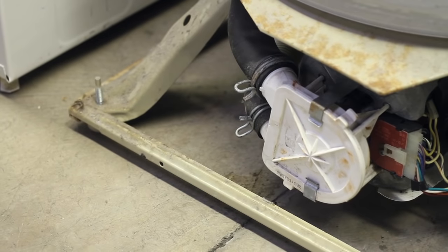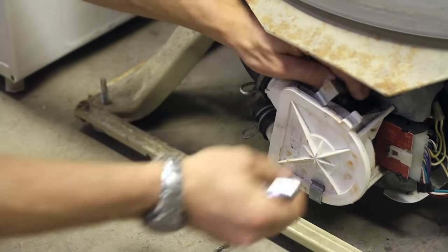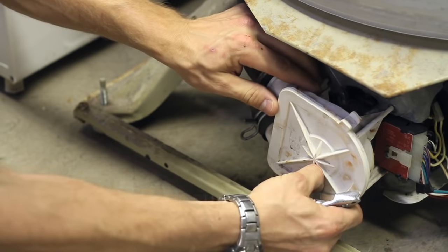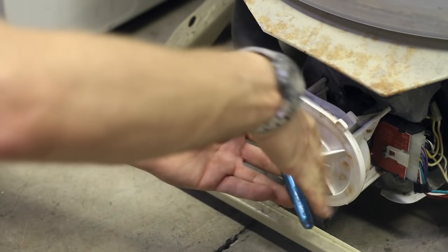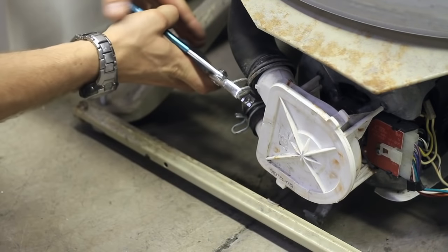In order to access the drain pump, you'll take the cover off, remove the two clips, and remove the metal clamped hoses.